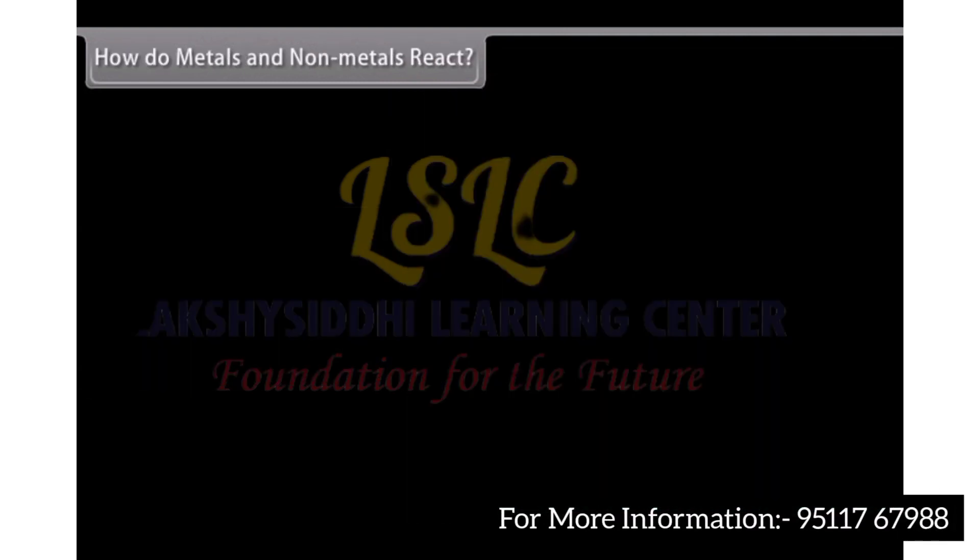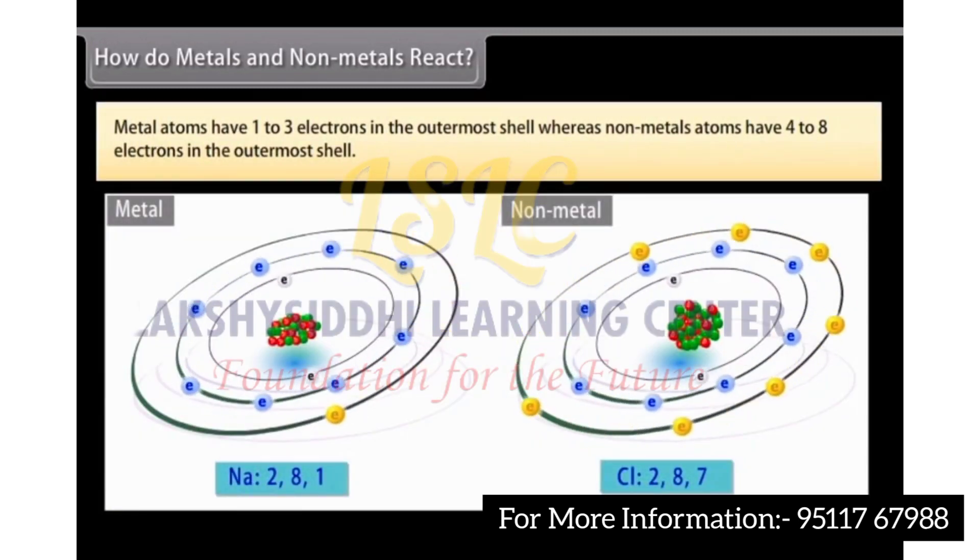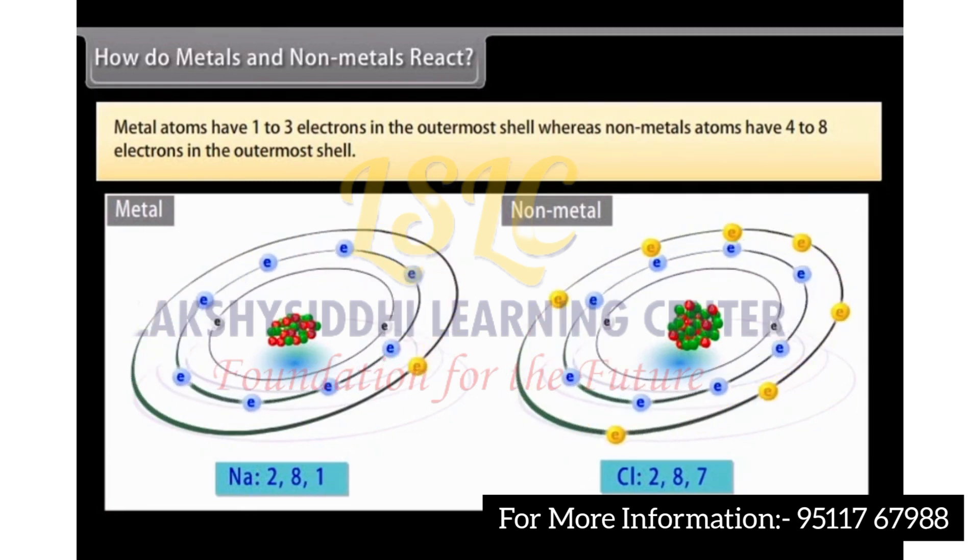How do metals and non-metals react? Metal atoms have 1 to 3 electrons in the outermost shell, whereas non-metal atoms have 4 to 8 electrons in the outermost shell.